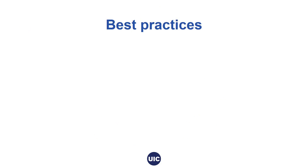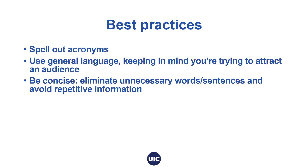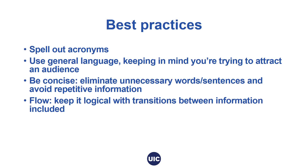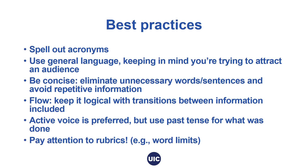In addition to the iterative process, additional best practices include the following. Spell out all acronyms—do not assume your reader will know what an acronym stands for. Use general language as opposed to the specialized language of your field. For specialized terms and phrases you must use, provide a brief definition to the reader. Keep in mind that you're trying to attract a large audience. Be concise: eliminate unnecessary words and sentences and avoid repetitive information. Maintain flow by having logical transitions between the information you include. Write strongly by maintaining an active voice throughout the abstract. If you are referring to something you have already completed, like data collection or an experiment, use the past tense. Pay attention to the rubrics provided by the opportunity you are applying to—word limits and other criteria are very important.